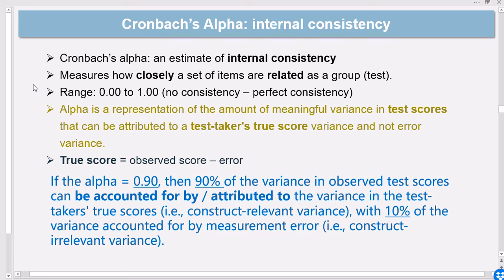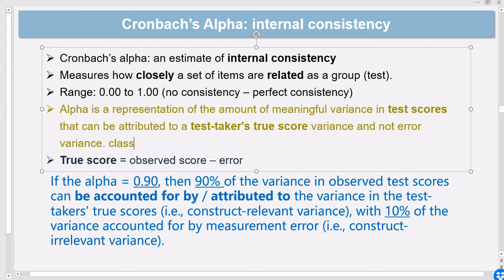One more thing is that Cronbach's alpha is a representation of the amount of meaningful variance in test scores that can be attributed to test-takers' true score variance and not the error of measurement. This is actually an idea based on classical test theory.